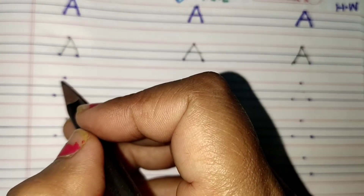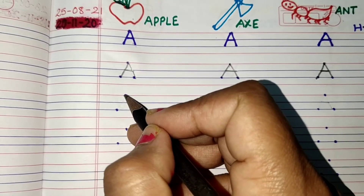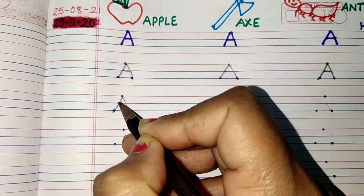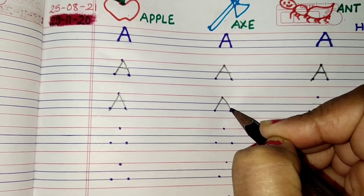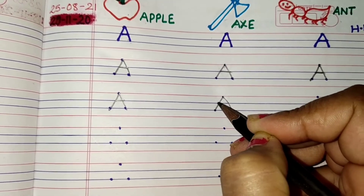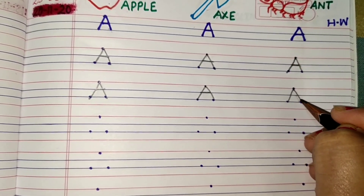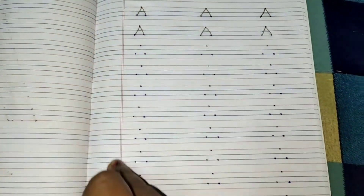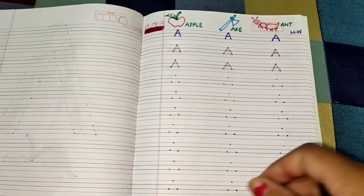A — which alphabet is this? It's A. Okay, is tarhan se you have to write the alphabet A. You have to finish this full page and send the pictures to ma'am. Bye bye!